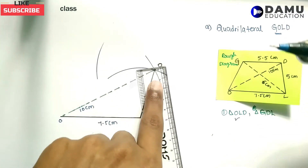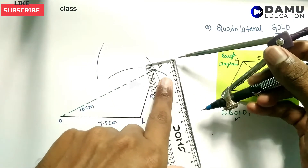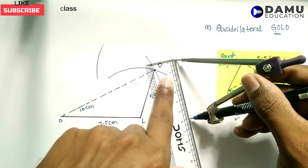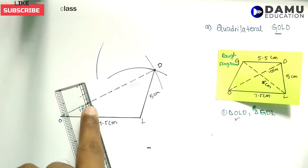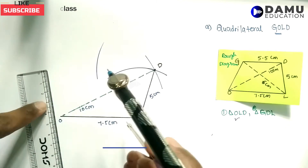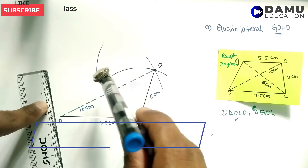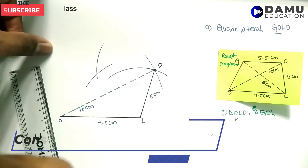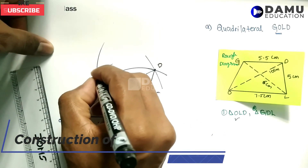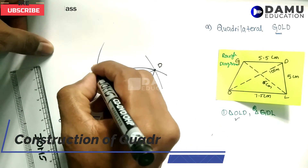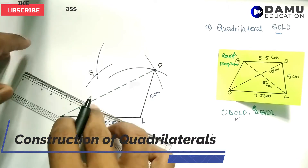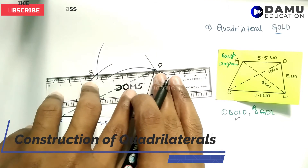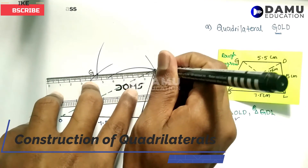Now LG = 6 cm. Mark 6 cm on the ruler, and with L as center draw one arc. Where this arc coincides with the GD arc, that intersection point is G. Join G to D using the ruler.